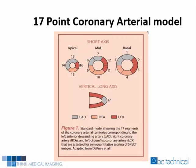To understand semi-quantitative scores obtained with SPECT imaging, it is necessary to first become familiar with the coronary arterial model used. Semi-quantitative scoring was initially based on a 20-segment model, which was used before the current 17-segment model was introduced and adopted as the standard. The 17-segment model includes four segments from the apical slice, six segments from the mid and basal slices short axis, and one segment from the vertical long axis slice.